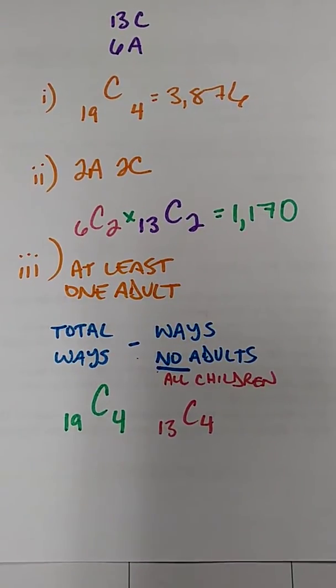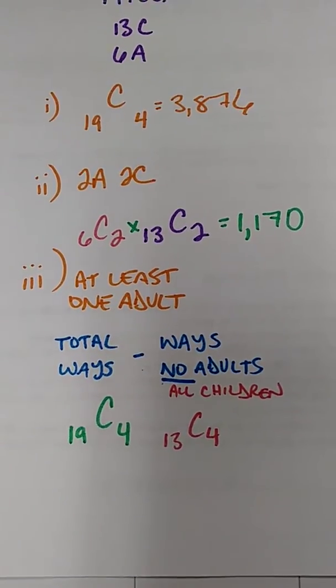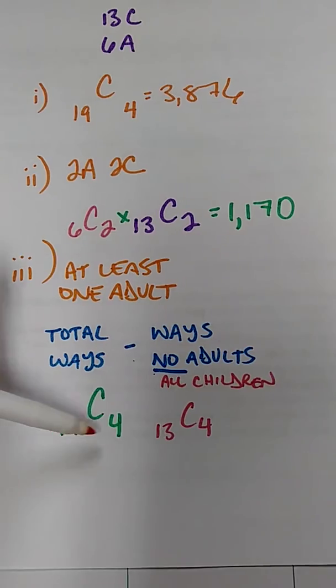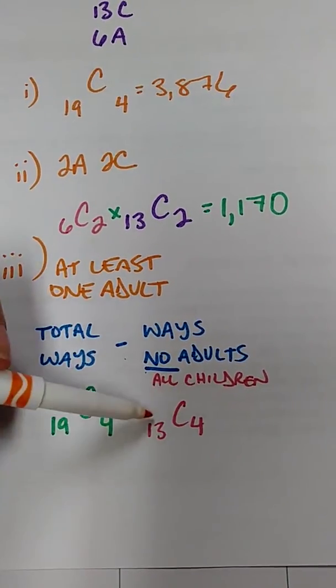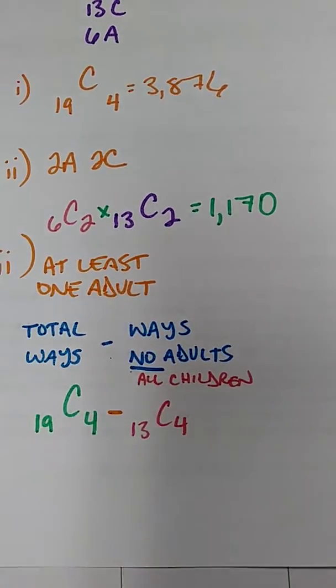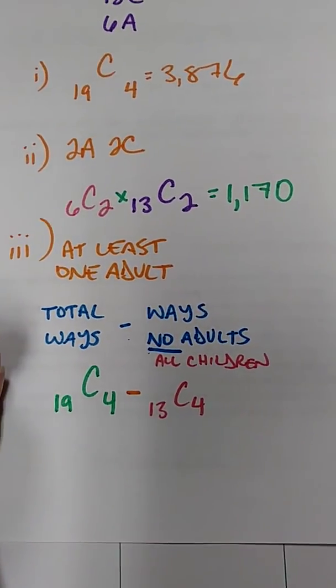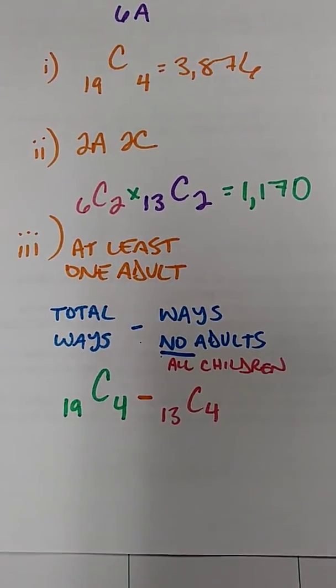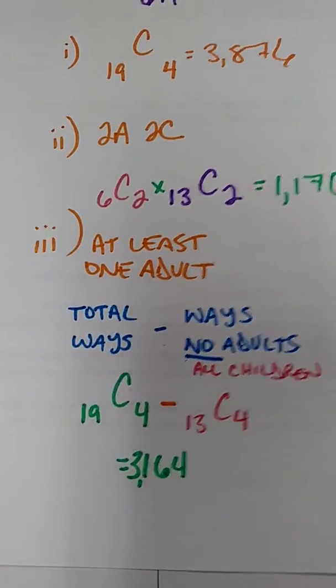Now we have to ask ourselves if these decisions are happening at the same time or at different times. So we have to choose four people altogether. In this choice, we've chosen all four. This one's done. In this choice, we've chosen all four. This one's done. So these choices are happening at different times. We'll subtract these two things. So all we have to do is type this in our calculator. 19C4 minus 13C4. And our final answer for this is going to be 3,164.